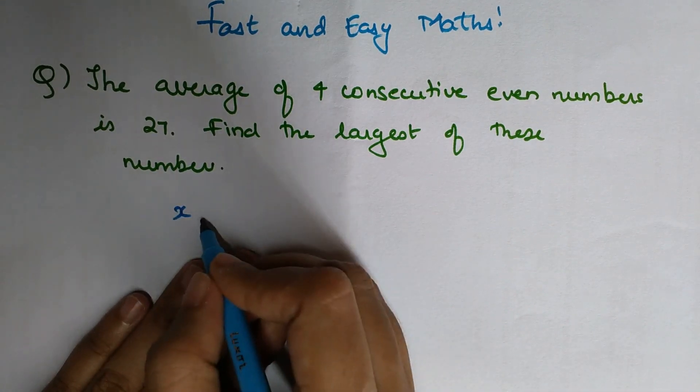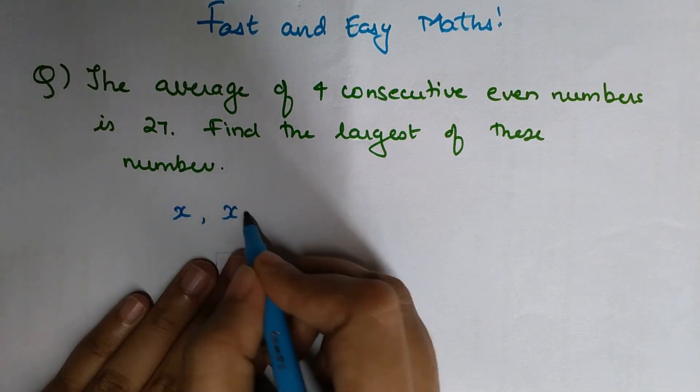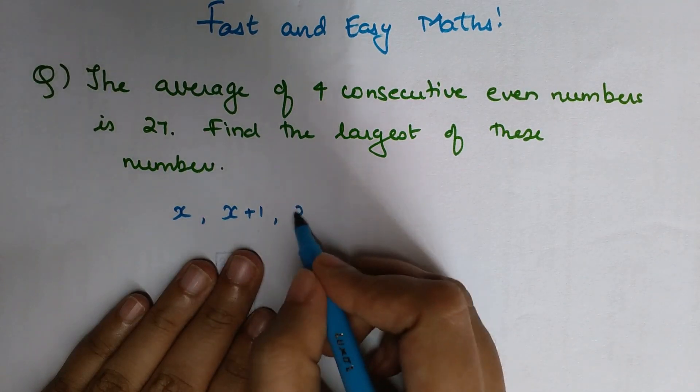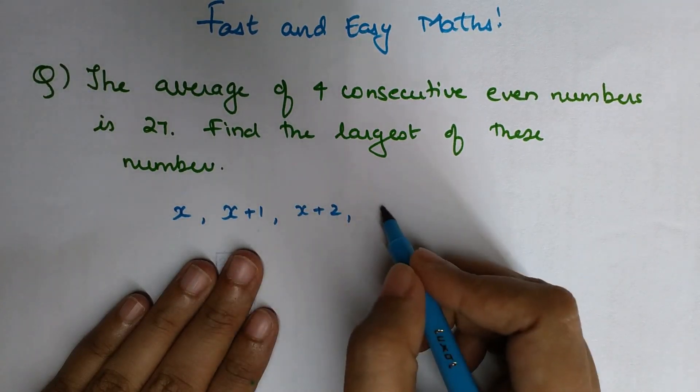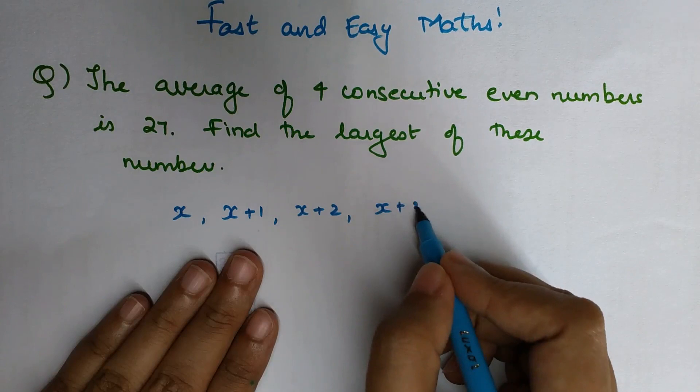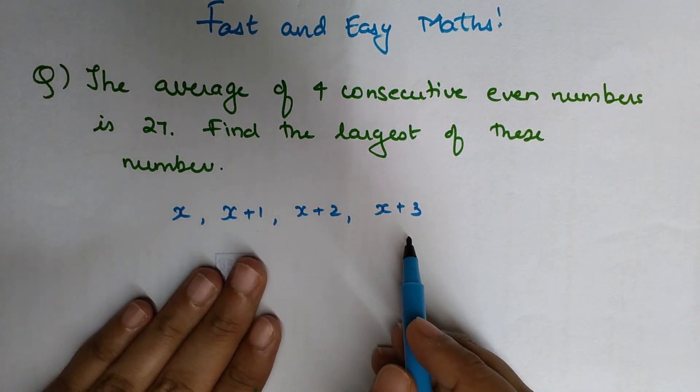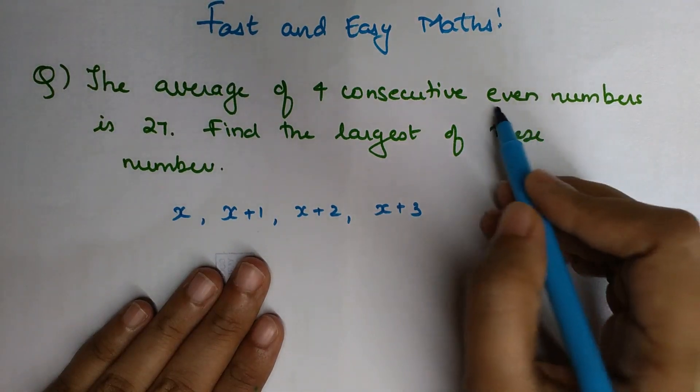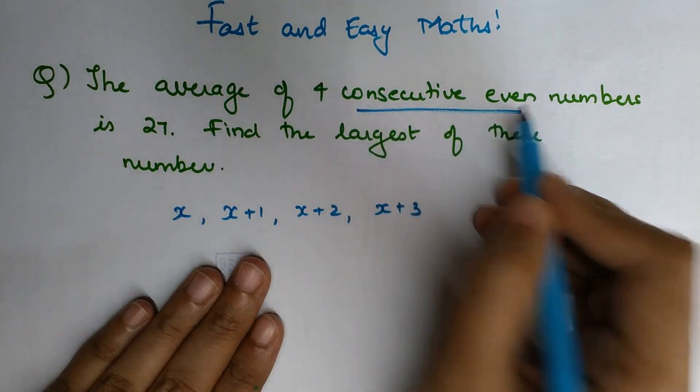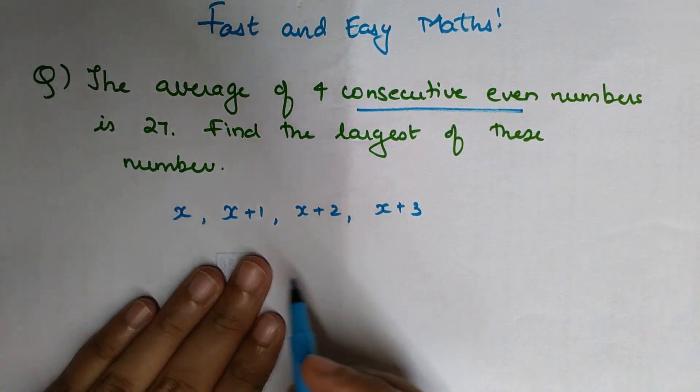If we're talking about consecutive numbers, then the next number would be x+1, the next would be x+2, and the next would be x+3, because we're talking about four consecutive numbers. But students, don't forget they mentioned consecutive even numbers, so in this case if you want even numbers...